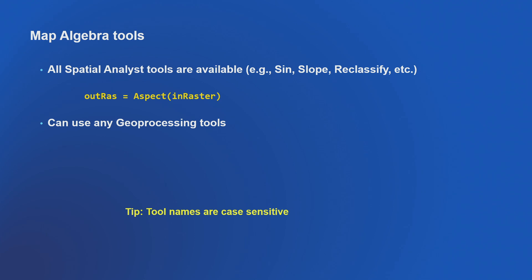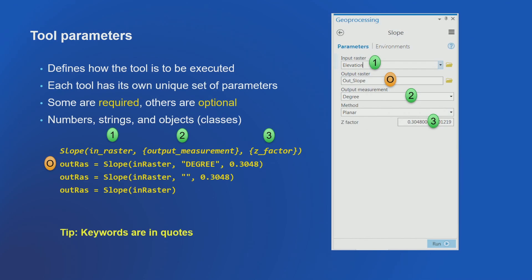Every tool has a series of parameters. We have documentation — the first line shows the syntax. Slope in_raster is a required argument — not in brackets. Others are optional and have defaults. Look at the help documentation to see defaults. The second line specifies the parameters, correlating the same as in the tool itself.